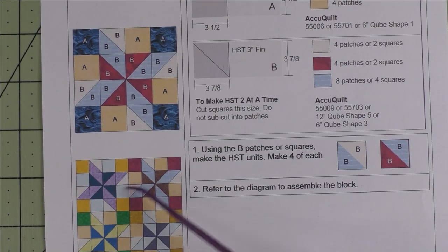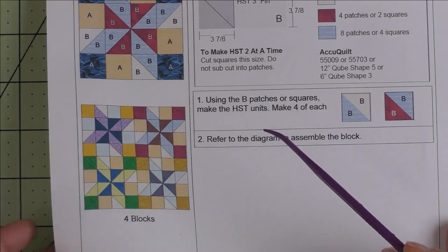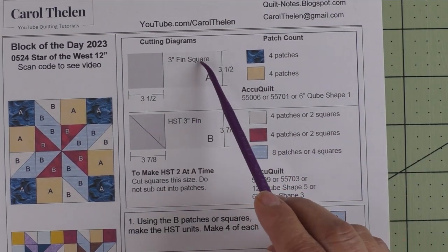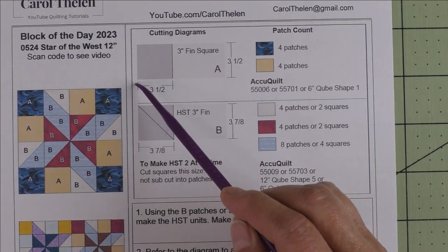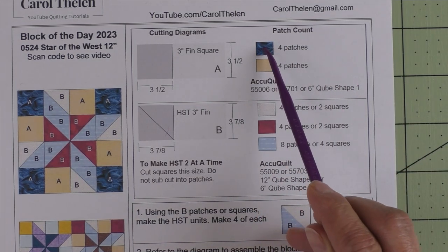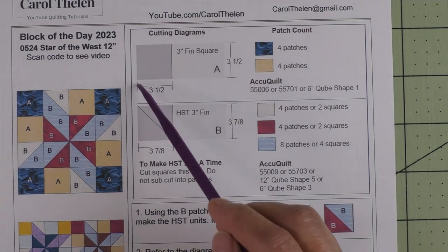Here is what four blocks look like together. We're going to cut two patches. Patch A is a three-inch finished square. For rotary cutting, you cut three-and-a-half-inch squares. For the blue, you'll need four patches. And for the tan, you'll need four patches. So cut four of these.